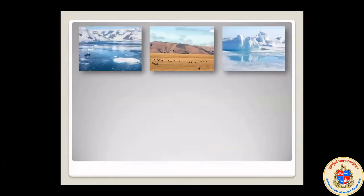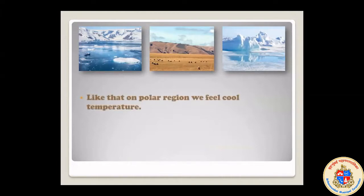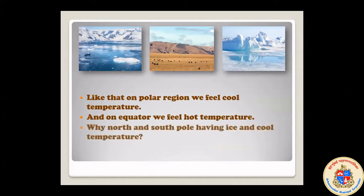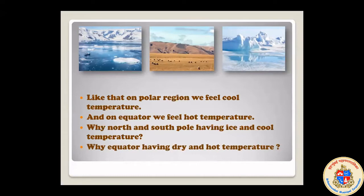There are three pictures. The first picture is from the North Pole, the second picture is on the equator, and the third picture is from the South Pole. On the polar region, we feel a cool temperature, and on the equator, we feel a hot temperature. Why do the North and South Poles have ice and cool temperature? Why does the equator have dry and hot temperature? Why on Earth are there different places having different temperatures? We will get the answers in this chapter.